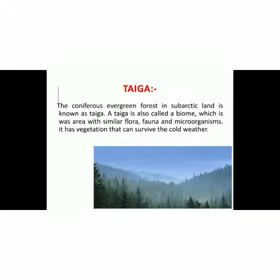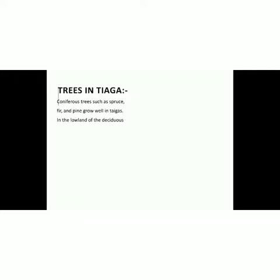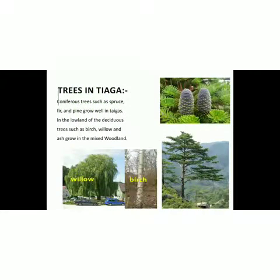The vegetation in taiga can survive the cold weather of the northern hemisphere sub-arctic land. The trees in taiga include coniferous trees such as fir, spruce and pine, which grow well in taigas. In the lowland of taiga we also have trees like birch and willow.